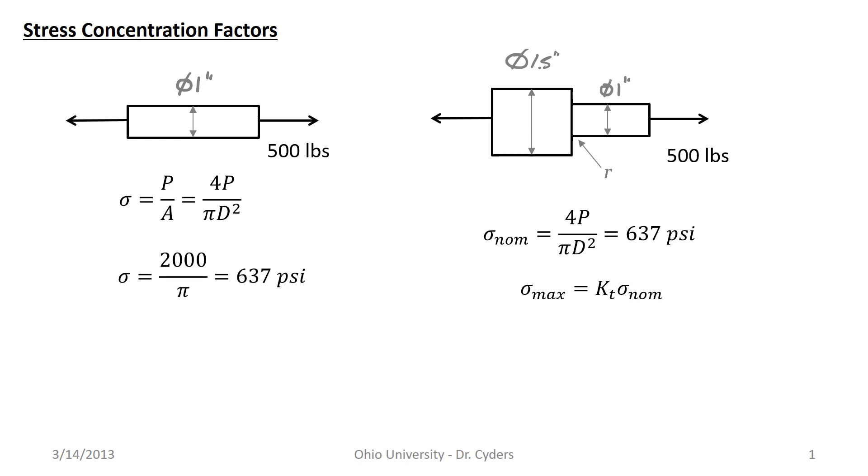But the maximum stress at this corner, we're going to call sigma max. That's based on a KT value that's been tabulated based on this geometry. We can look up that KT value and say the presence of this particular type of notch in this geometry with this type of load is going to increase that nominal stress by a factor KT. Hence the term stress concentration factor.